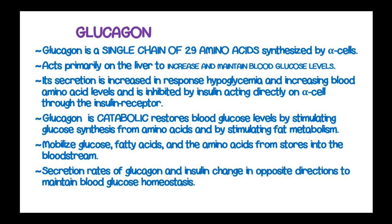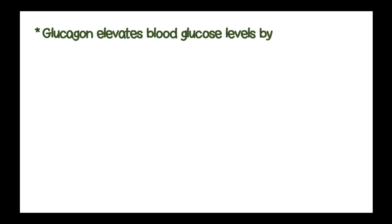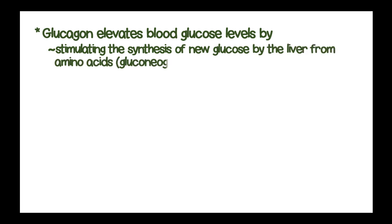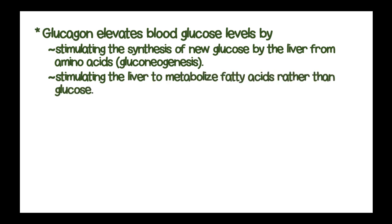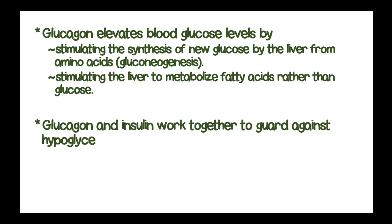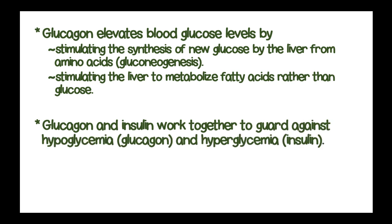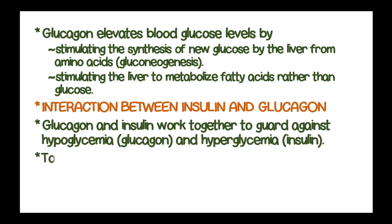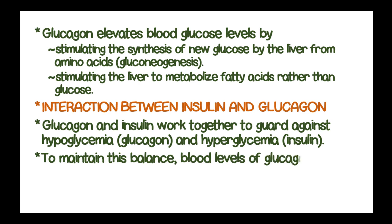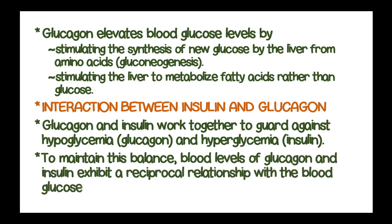Glucagon elevates blood glucose levels by two mechanisms: stimulating the synthesis of new glucose by the liver from amino acids by a process known as gluconeogenesis, or by stimulating the liver to metabolize fatty acids rather than glucose. Glucagon and insulin work together to guard against both hypoglycemia and hyperglycemia. Blood levels of glucagon and insulin exhibit a reciprocal relationship with the blood glucose level determining the balance.